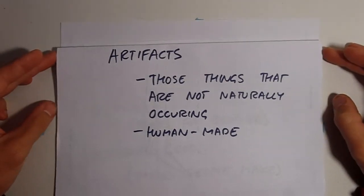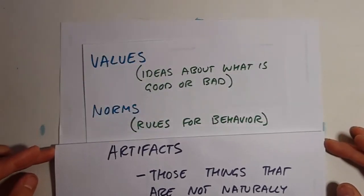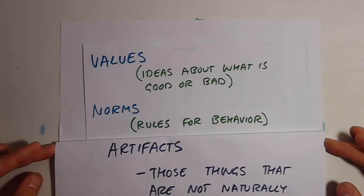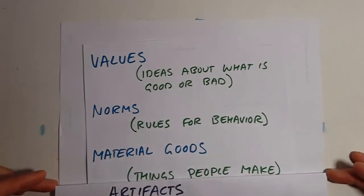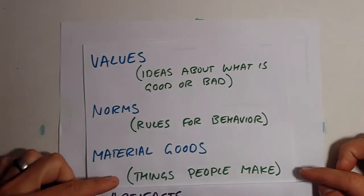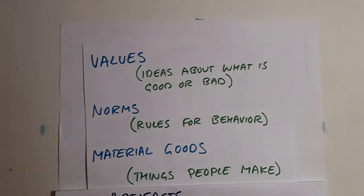A key idea within sociology is that things like values and norms are also created by societies as tools to help them survive. So, a primary aspect of culture in sociology is that it's the things, both material and non-material, that humans make in order to help them survive.